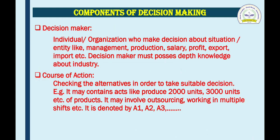Components of decision-making. Number one: decision-maker. A decision-maker is nothing but an individual or organization who makes a decision about a situation or entity. Situations may be like laying off an employee or shifting an employee, and entities like management, production, salary, profit, export, import of goods, and so on. For the decision-maker, it is necessary that they must possess deep knowledge of the industry.